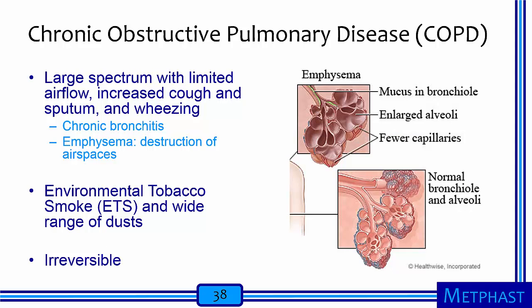Chronic obstructive pulmonary disease, or COPD, includes a large spectrum of diseases characterized by limited airflow, increased cough and sputum, and wheezing. Examples include chronic bronchitis and emphysema. In emphysema, the walls of the alveoli become compromised, enlarging the alveoli and reducing the ability of oxygen to transfer to the bloodstream. COPD can develop from exposure to environmental tobacco smoke and a wide range of dusts, including wood dust. It is irreversible in that once your alveoli are compromised, there is no way to treat them.